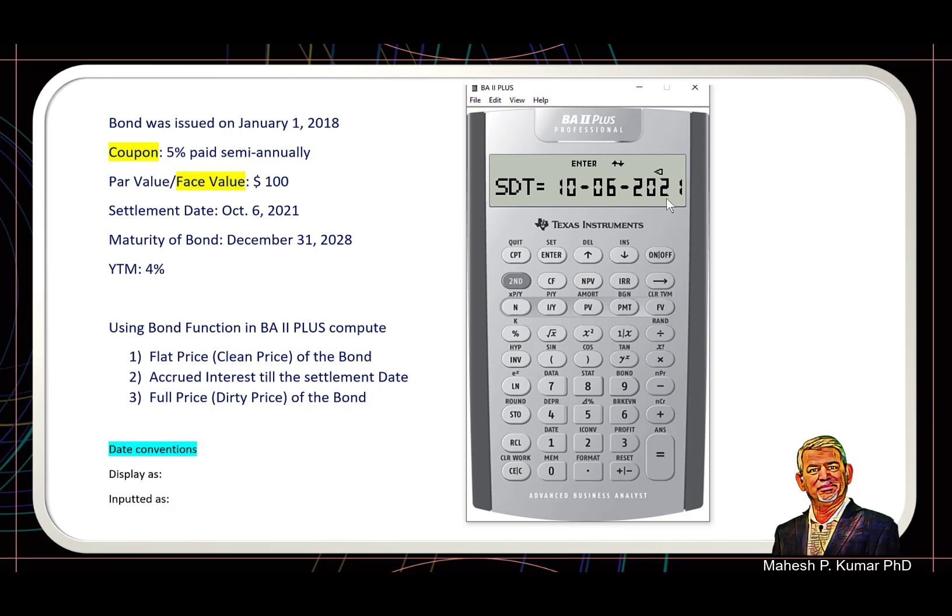When we click enter, 6th of October has been entered into the system, 2021. So this is settlement date for the bond. Then we go down there and it is asking for coupon, which means coupon rate, which is 5%. So we will enter five and then go down.